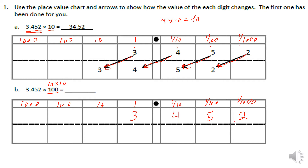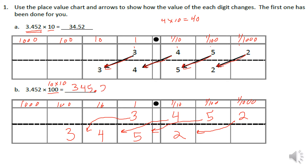The 2, which would come to the hundredths if multiplied by 10, now moves two place values and goes to the tenths. The 5 in the hundredths moves two place values to the ones. The 4 in the tenths moves two place values to the tens. The 3 moves two place values to the hundreds. So 3 and 452 thousandths times 100 equals 345 and 2 tenths.